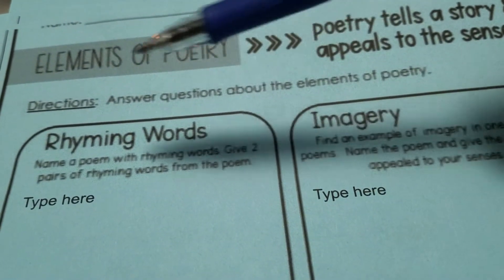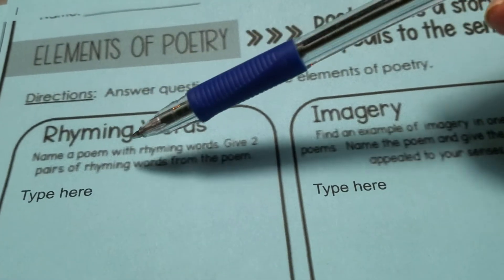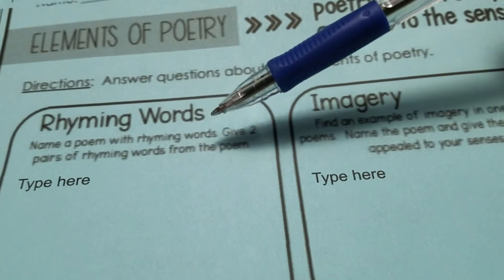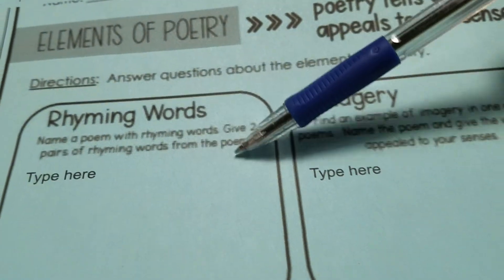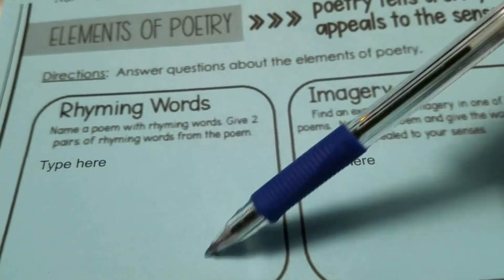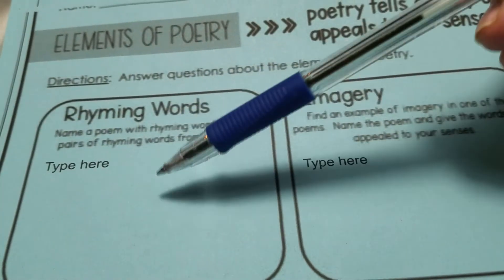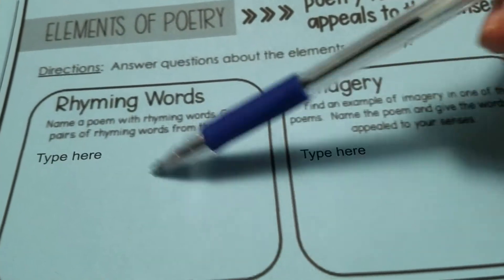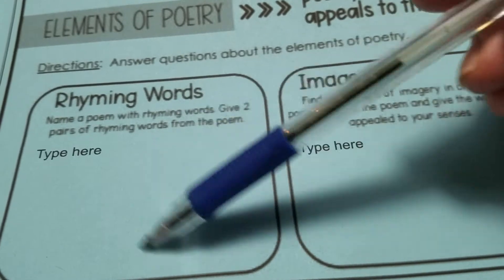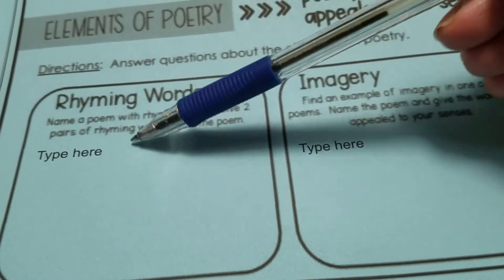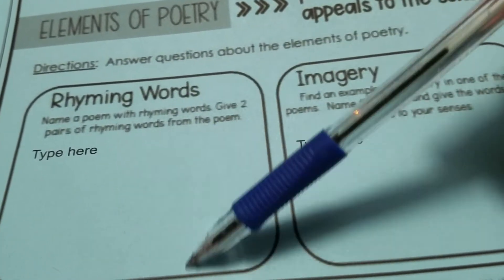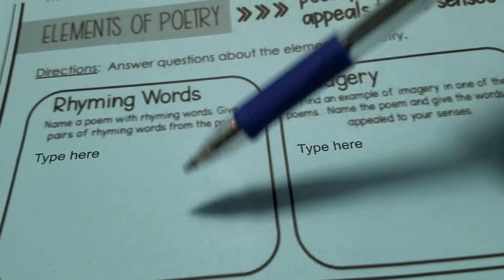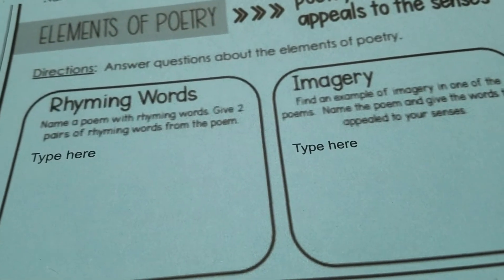Give two pairs of rhyming words from this poem. Really, all you need to do is put the rhyming words. You don't need to write a sentence — they don't give you a ton of space. Just give me the rhyming words.